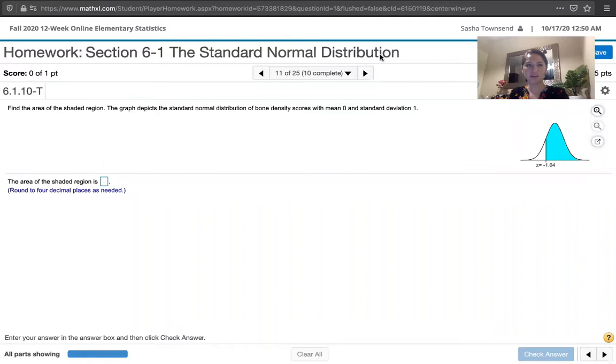We're asked to find the area of the shaded region and we're told that the graph depicts the standard normal distribution of bone density scores that has a mean of zero and a standard deviation of one. So the shaded area is an area to the right of a z-score and it's a negative z-score rather than being to the left.